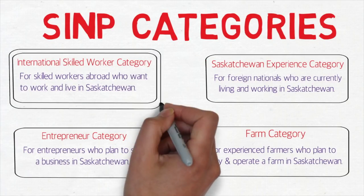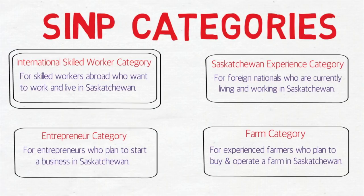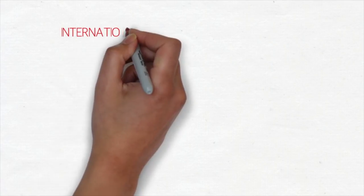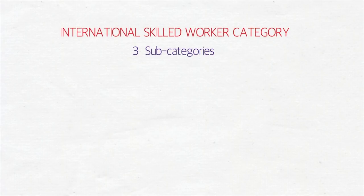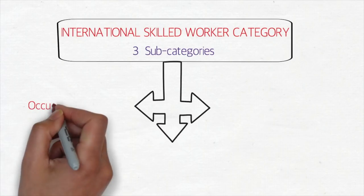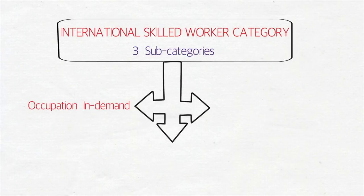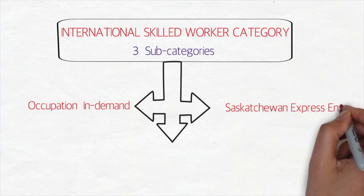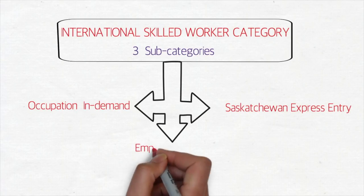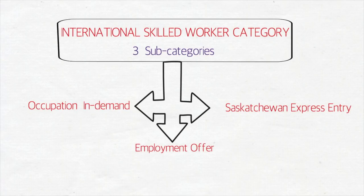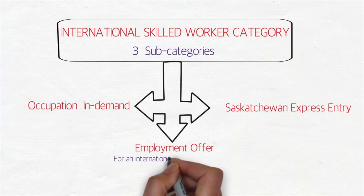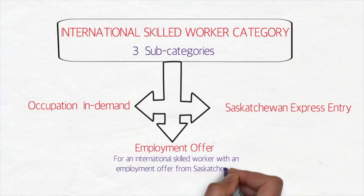In this video we'll be talking only about the International Skilled Worker category because the EOI system is applicable only for this category. The International Skilled Worker category is further divided into three subcategories: the Occupation in Demand subcategory, the Saskatchewan Express Entry subcategory, and the Employment Offer subcategory for international skilled workers with a job offer from Saskatchewan.